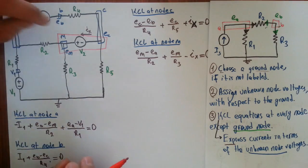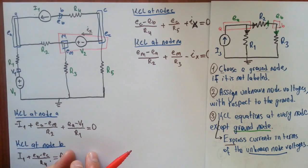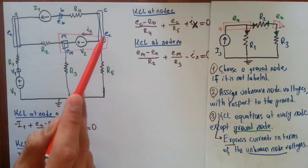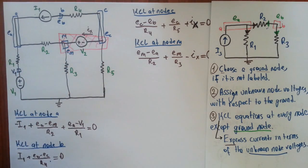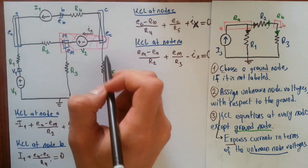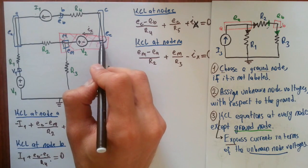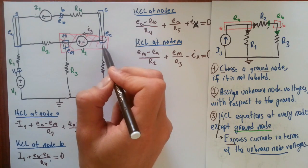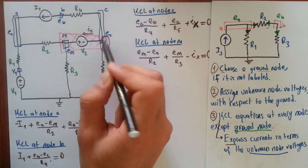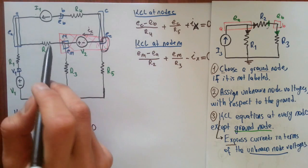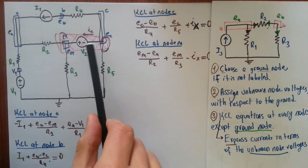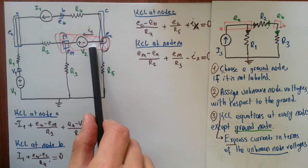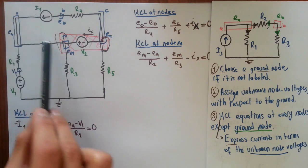Super node analysis is a better way to analyze the circuit using node analysis. In super node analysis, you construct a super node — you think of this as actually one node — and write down the KCL equation at this node. Unlike other nodes, this super node has two terminals: one terminal is node C, and the other is node M. You omit the branch containing the independent voltage source and write KCL equations accordingly.